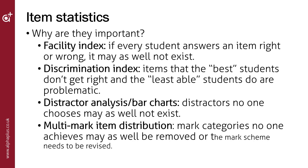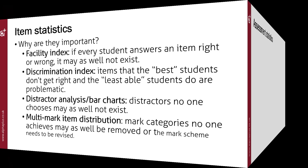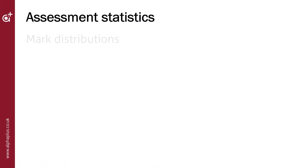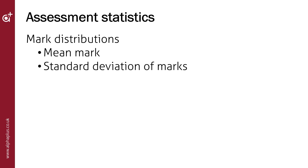We have looked at item level statistics, but there are also measures to look at how assessments perform as a whole. The basic assessment level statistics look at mark distributions and are general statistics applied to an assessment regime. They include the mean mark, standard deviation of marks, skewness and kurtosis. There are others such as Cronbach alpha, which is used to measure reliability, but we don't have time to look at these in this video.